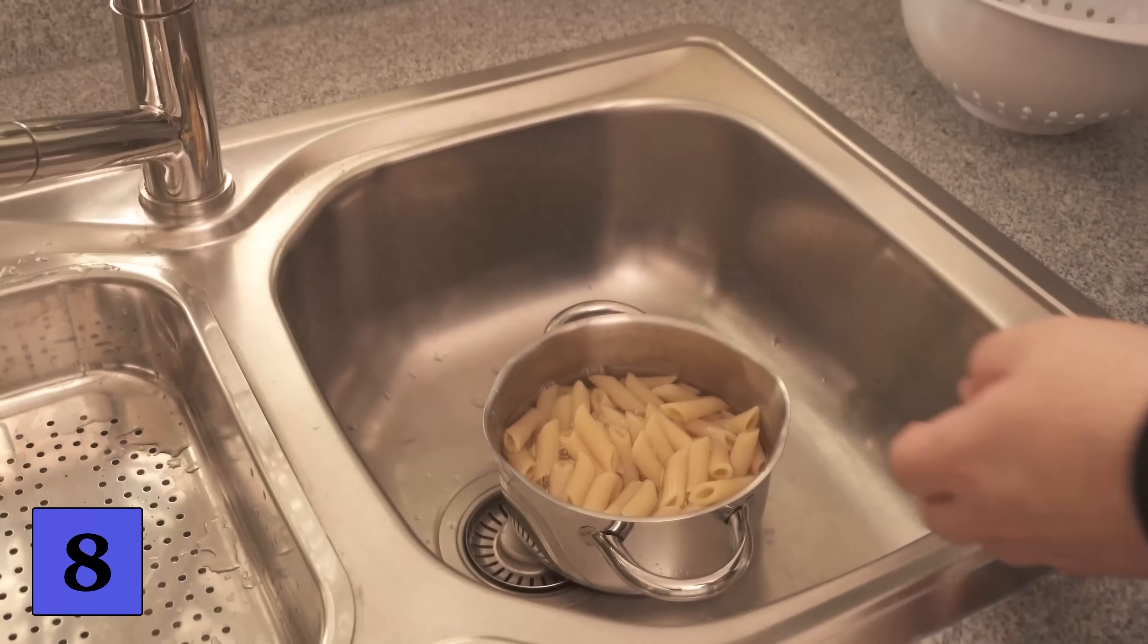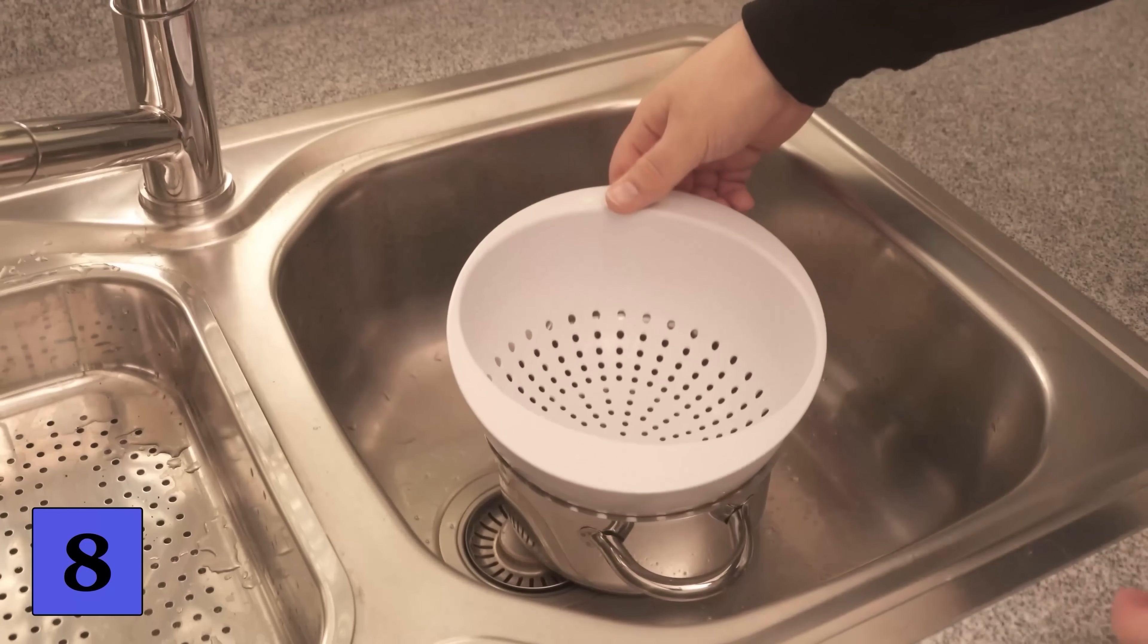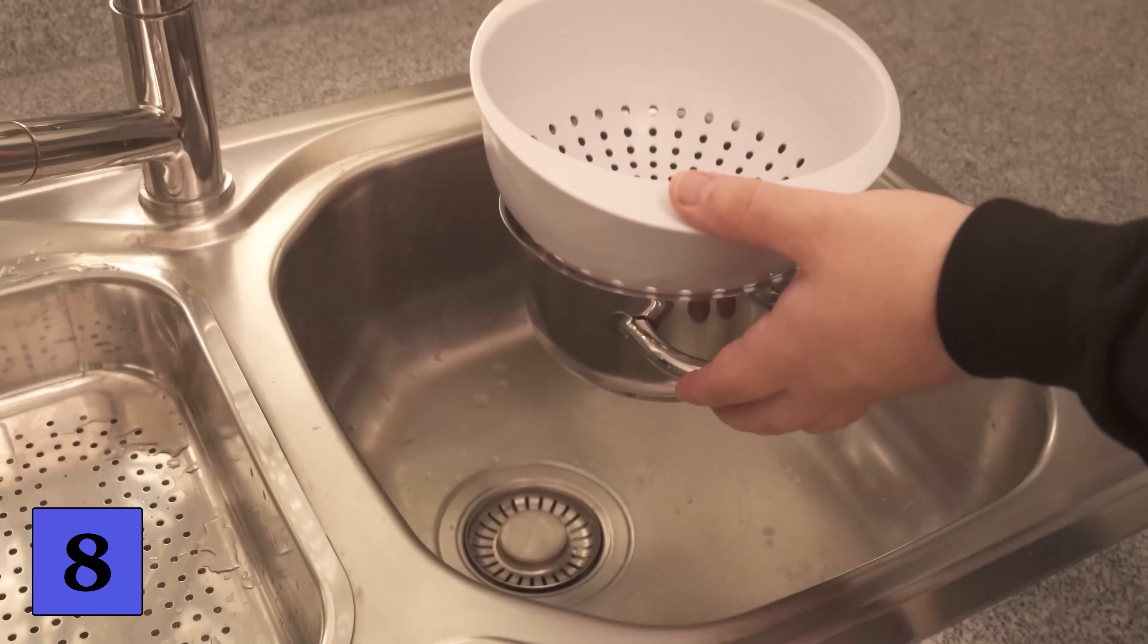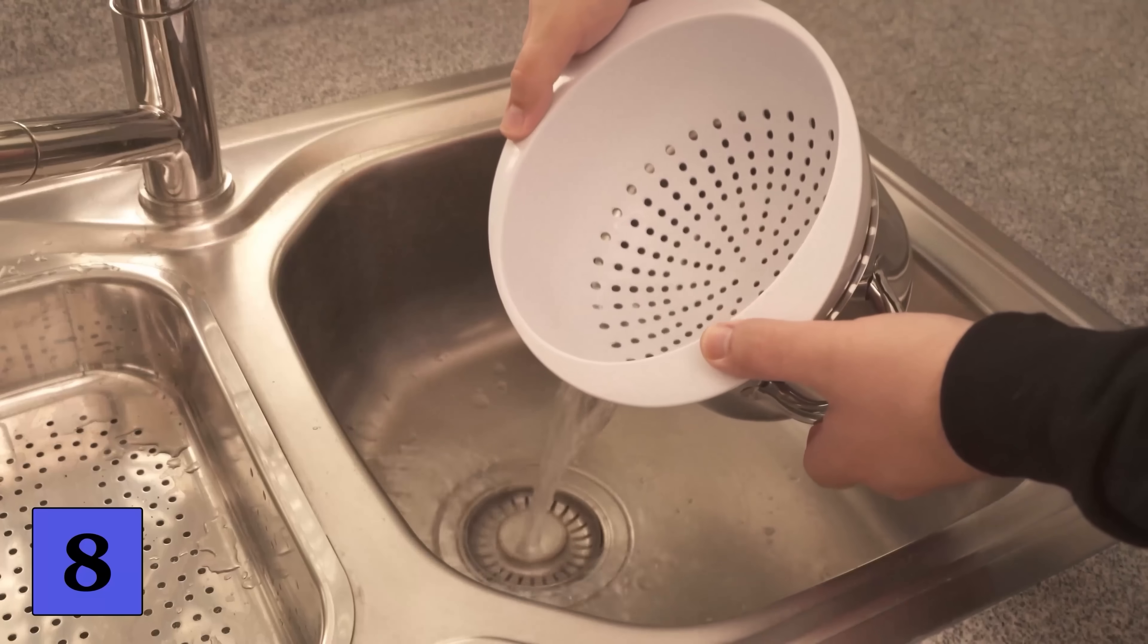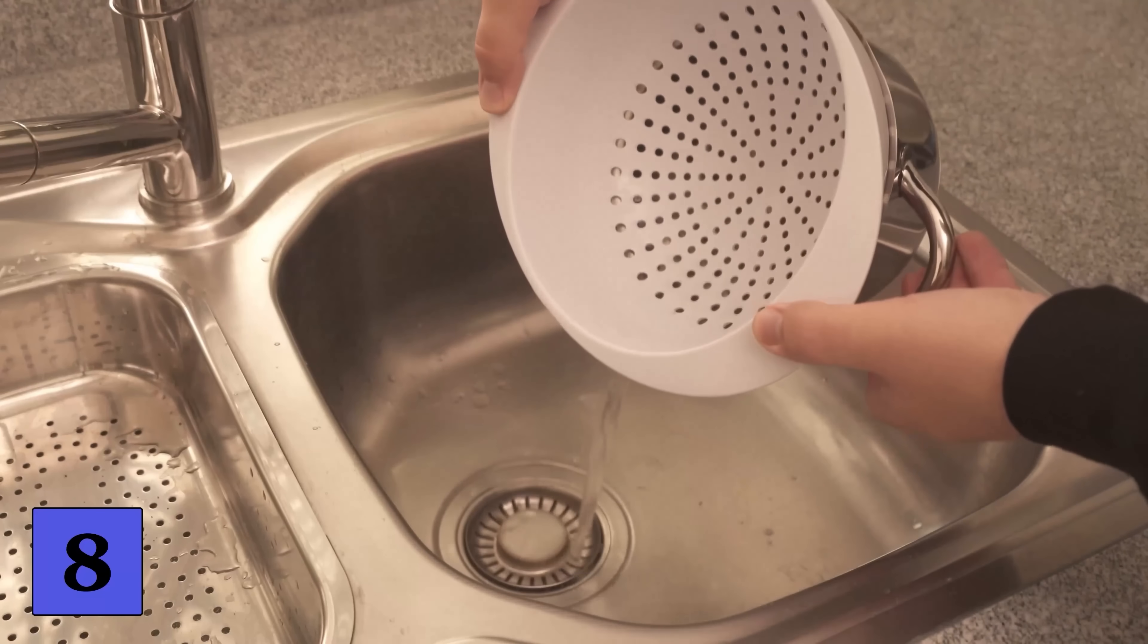To do this place the pot in your sink, push the strainer in from above and then simply tip the water away. This way the water can escape through the holes and the pasta stays in your pot.